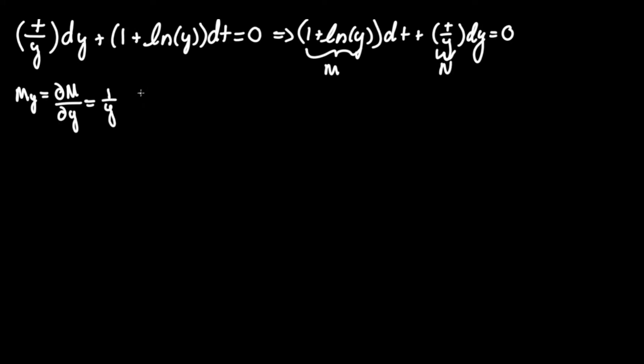Now let's do the opposite with n of t and this is equivalent to del n del t and since we are differentiating with respect to x the one over y is a constant and that would be times derivative of just t which is one and that also becomes one over y therefore m of y equals n of t and we can call this an exact equation.